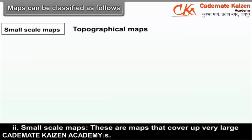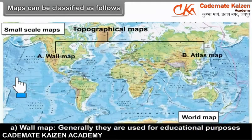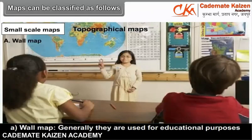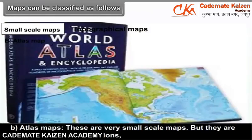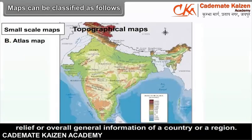Small-scale maps: these are maps that cover large areas. They are divided as wall maps — generally used for educational purposes or for display — and atlas maps, which are very small-scale maps but very useful to show locations, relief, or overall general information of a country or a region.